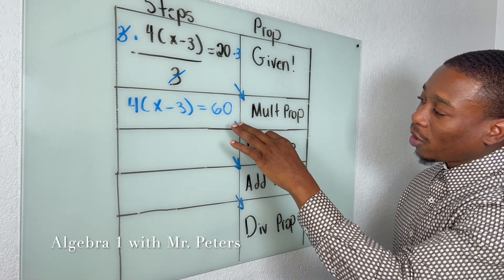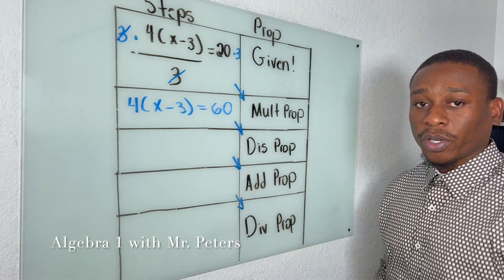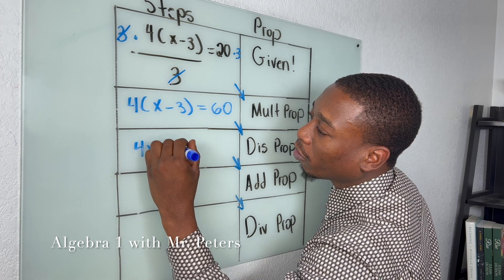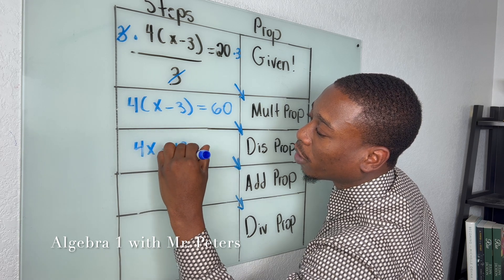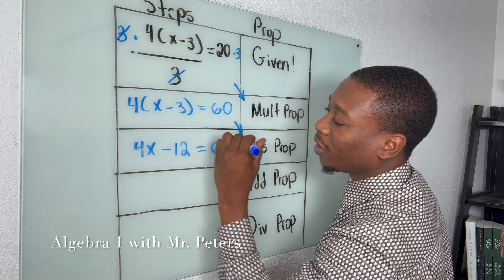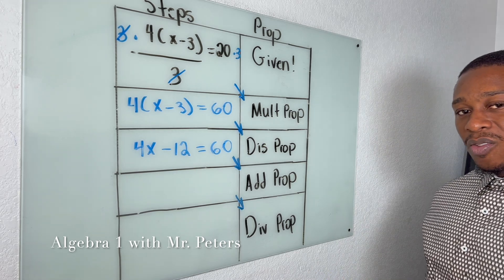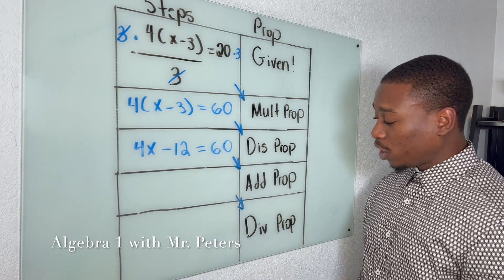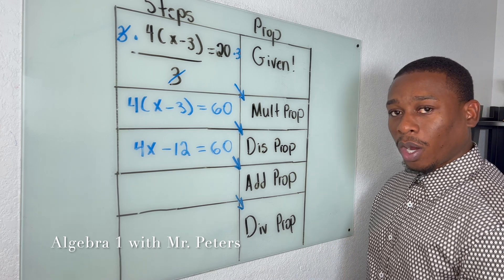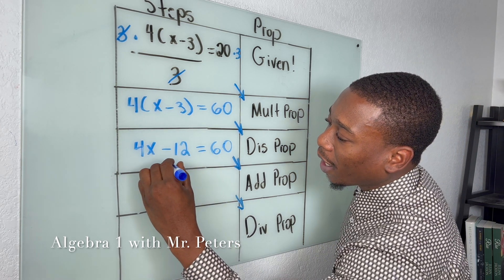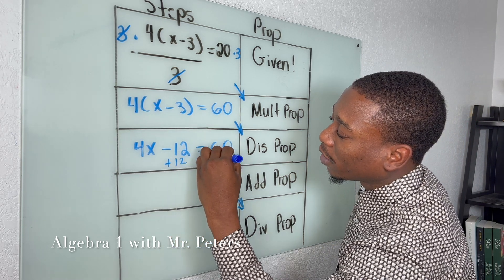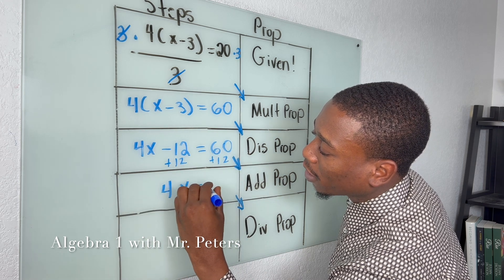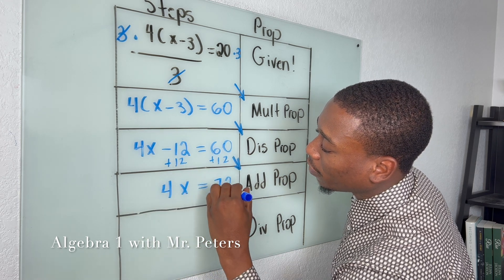They say we want you to use the distributive property to get to your next step. So once I distribute, I have 4x minus 12 is equal to 60. We know that in equations we need to isolate, so they say use the addition property of equality — add 12 on both sides — and now I have 4x is equal to 72.